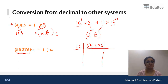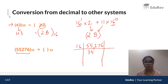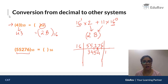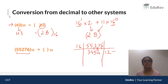Dividing 55276 by 16: 16×3=48, remainder 7. Then 16×4=64, remainder 87 remaining at that step. Then 16×5=80, remainder 76. Then 16×4=64 again, leaving remainder 12. So my remainder at this step is 12, which in hexadecimal is C.